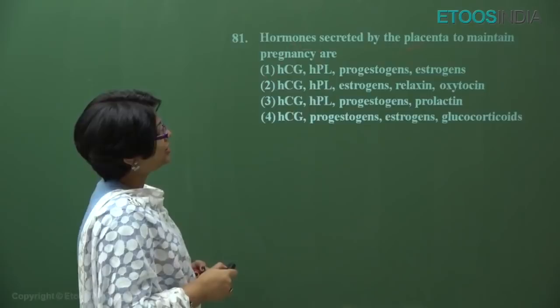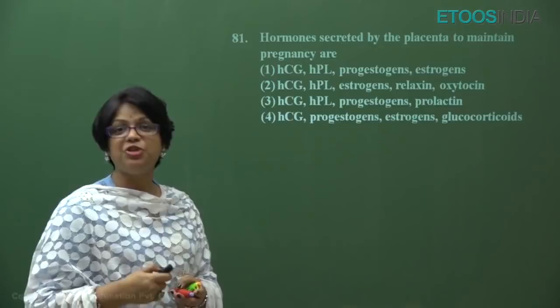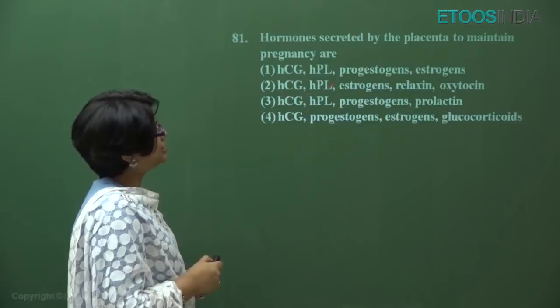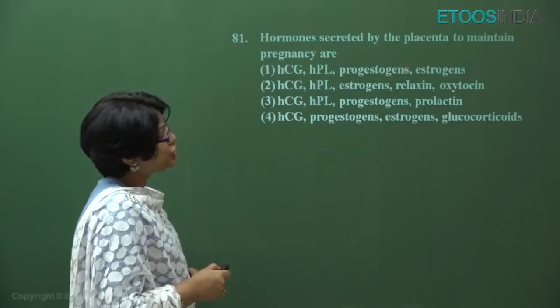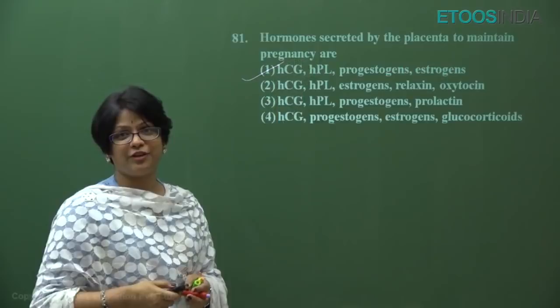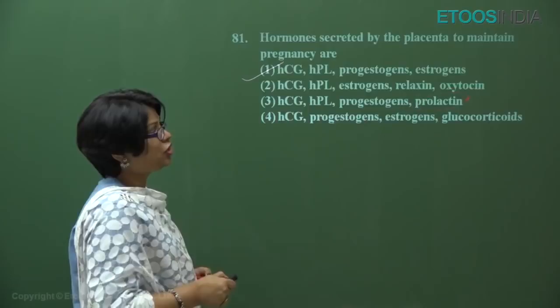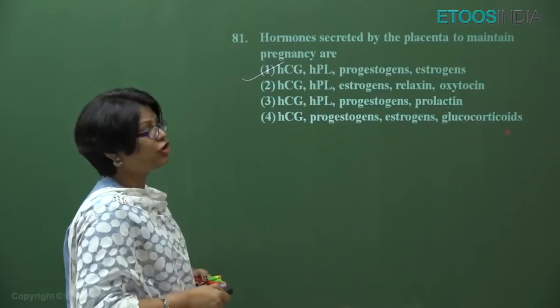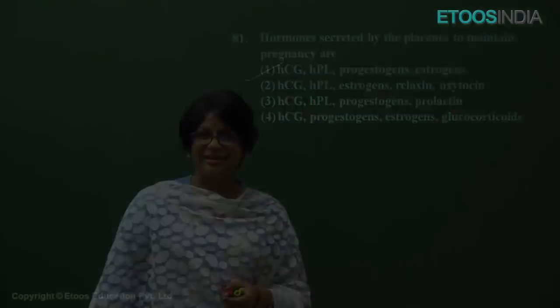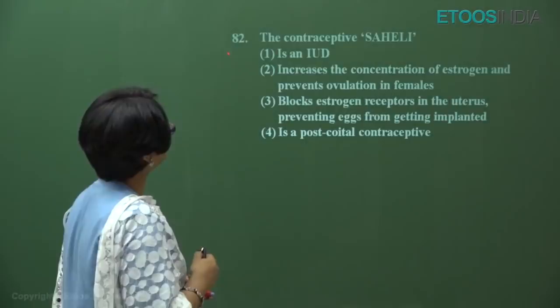Question number 81: hormones secreted by placenta to maintain pregnancy — direct NCERT line from human reproduction. The placenta secretes hCG (human chorionic gonadotropin), hPL (human placental lactogen), progestogens, and estrogens. Oxytocin is released by posterior pituitary; prolactin by anterior pituitary; glucocorticoids by adrenal cortex. Answer is option number one.